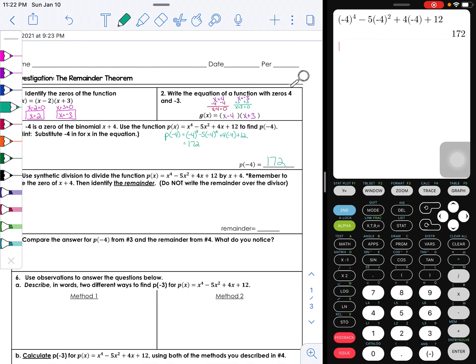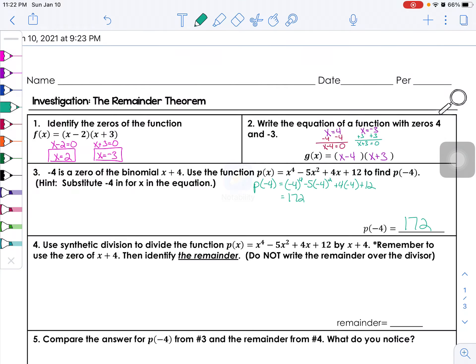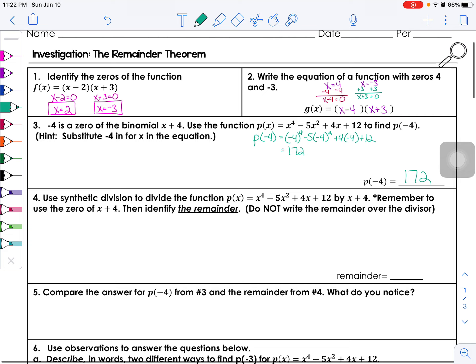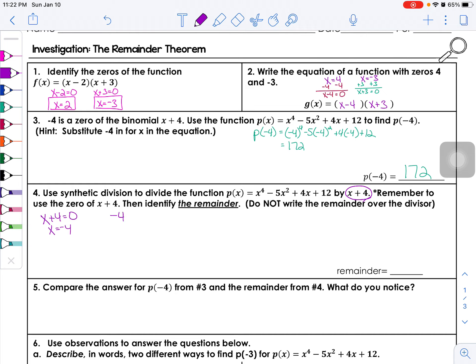All right, so now let's see what the next thing is that they want us to do. Okay, so use synthetic division—it specifically says synthetic division—to divide that function, same function, by x plus 4. Now remember, when we do this division for synthetic, we need to take this divisor and find its zero. So x plus 4 is equal to zero, which means x is equal to negative 4.